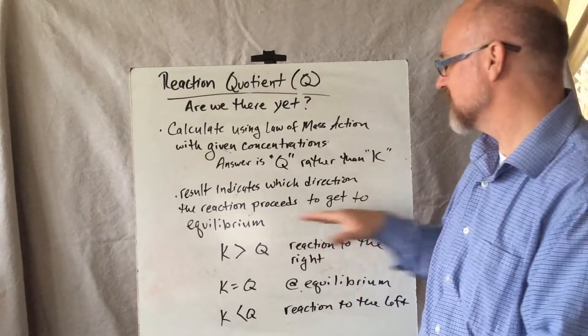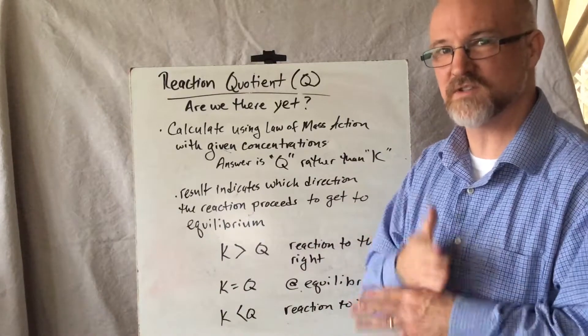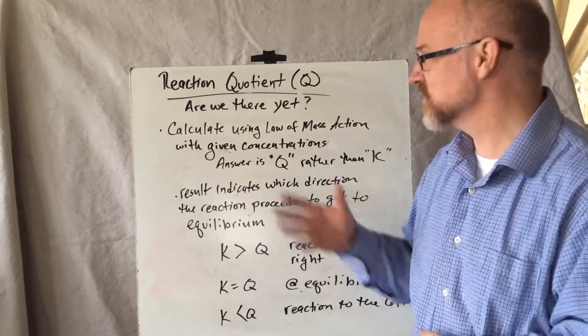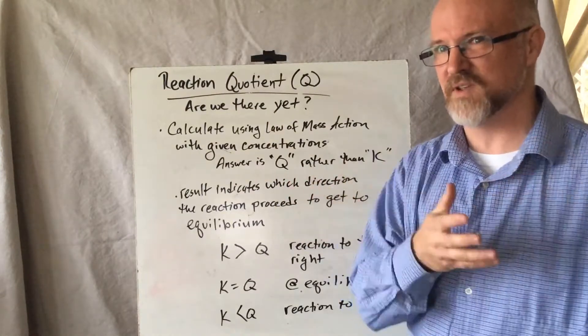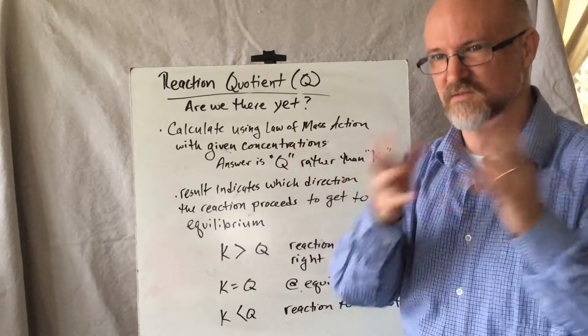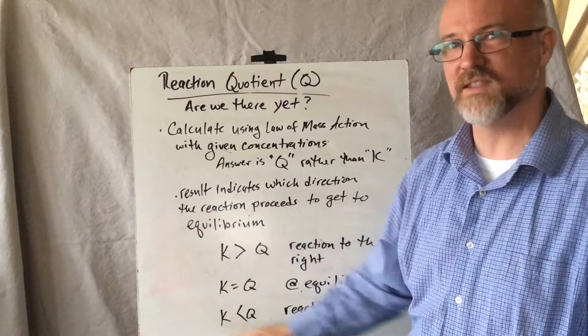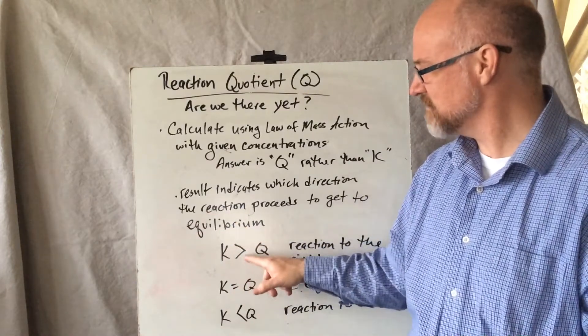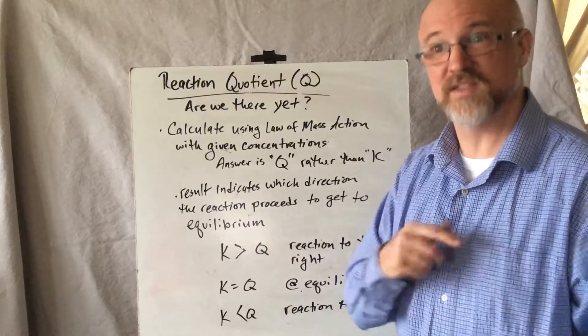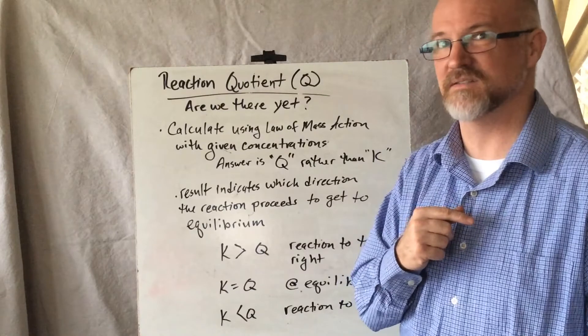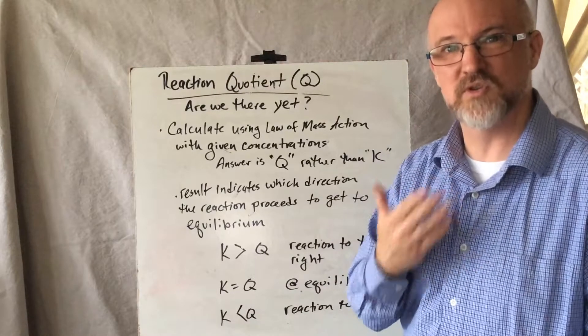And so the results indicate what direction the reaction is going in. I choose to write the K first. Textbooks always write the Q first. And logically that makes sense because you calculate Q and then you compare it to K. The verbiage makes it sound like you take Q and then it's either greater than, less than, or equal to K. But I choose to write it the other way around because that then makes the sign of the greater than or less than point the arrow in the direction that the reaction needs to proceed. So it's a little visual trick that I do to help me keep it straight that hopefully helps you keep it straight as well.